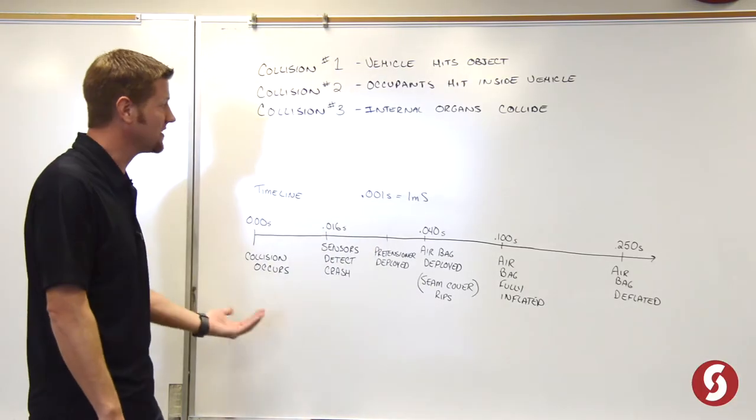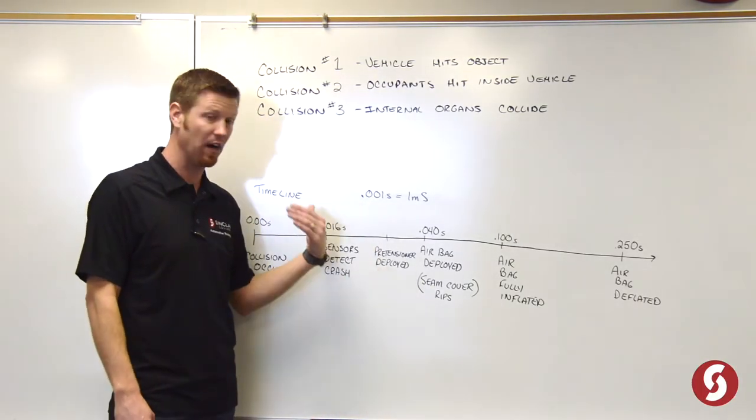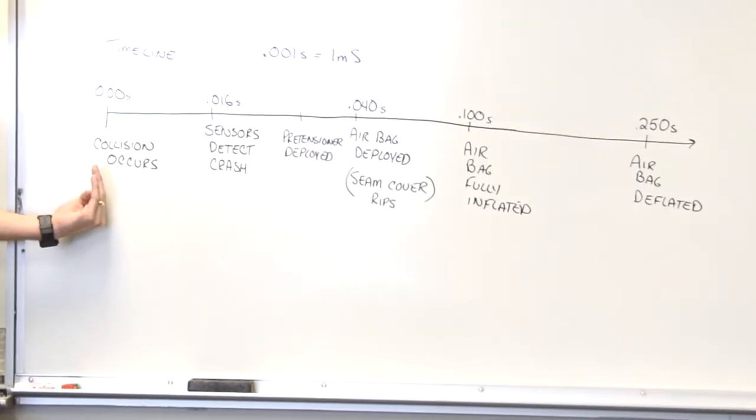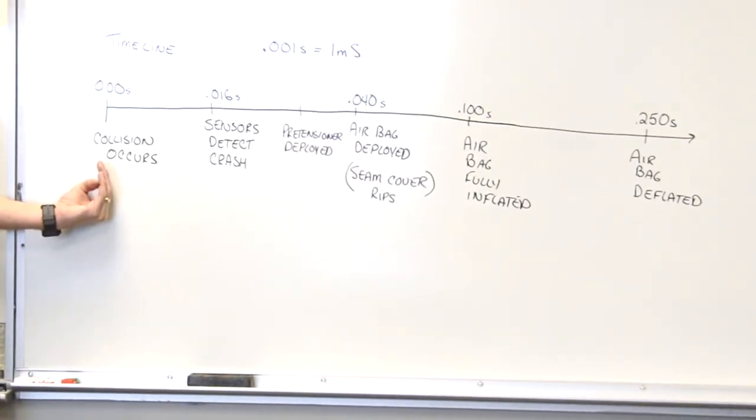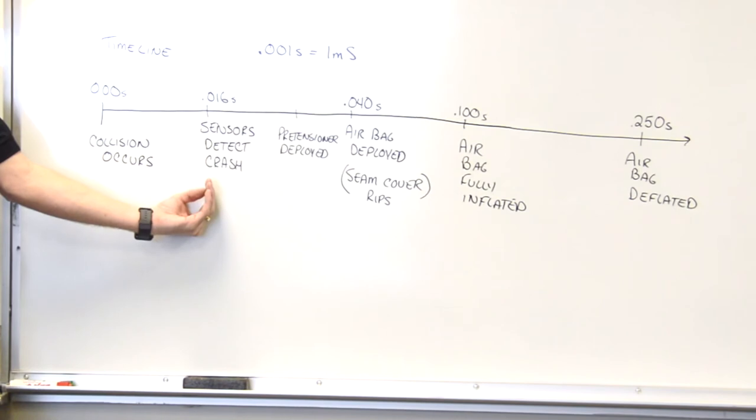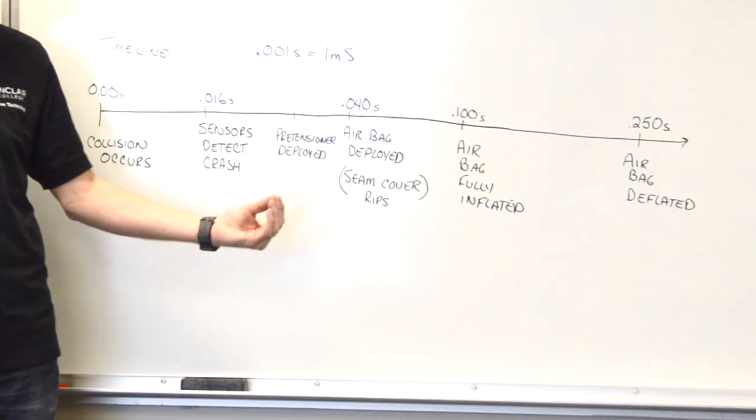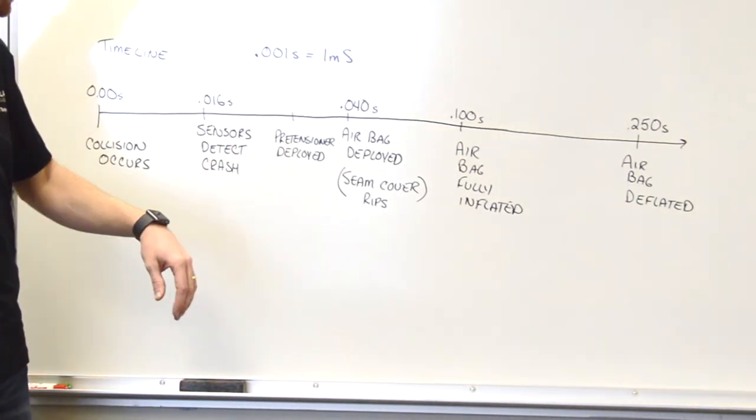Okay. Looking at the timeline. So an airbag has to be very fast. Zero seconds, the collision occurs. Within 16 milliseconds, the sensors detect the crash and the severity of the crash. And then...